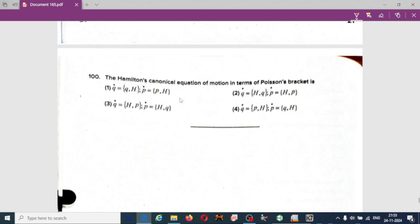Hamilton's canonical equation of motion in terms of Poisson bracket we can write it as Q dot is equal to Q comma H, P dot equal to P comma H. Among four options, option one is correct: Q dot equal to Q comma H and P dot.